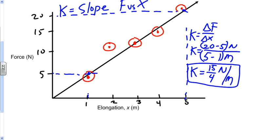And so if I want to find the total work from 0.0 to the elongation of 5 meters, what I need to do is I need to find the area under the curve. So I'm going to go ahead and I'm going to highlight that area.